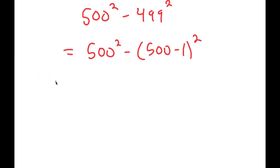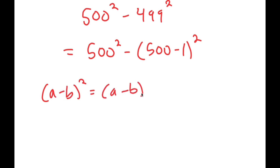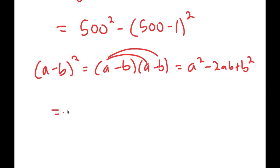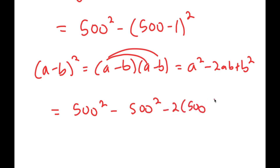If I have something in the form a minus b squared, this is equal to a minus b times a minus b, which, if I factor this out, is a squared minus 2ab plus b squared. So this is going to turn into 500 squared minus 500 squared minus 2 times 500 times 1 plus 1 squared.